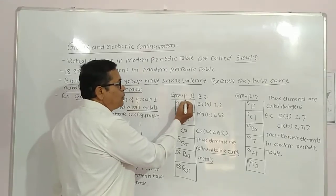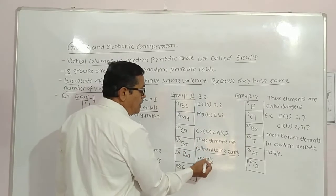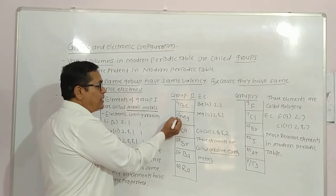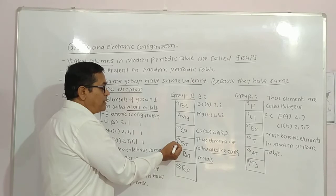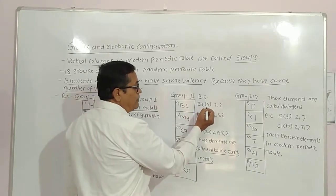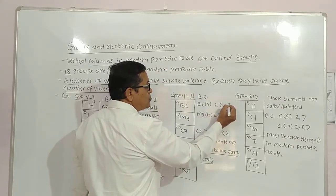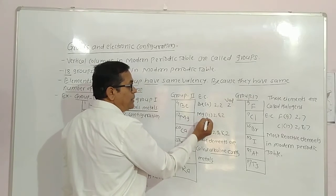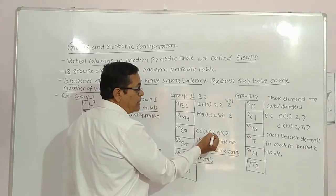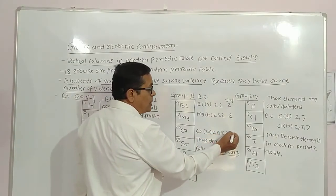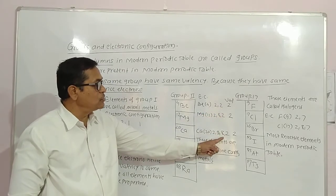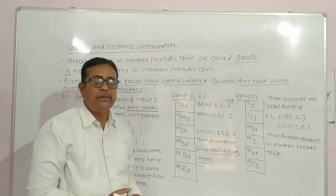Elements of Group 2, also called Group 2A, are called alkaline earth metals. The elements are: beryllium (atomic number 4), magnesium (12), calcium (20), strontium (38), barium (56), and radium (88). Beryllium: electronic configuration 2, 2 — valence 2. Magnesium: 2, 8, 2 — valence 2. Calcium: 2, 8, 8, 2 — valence 2. All Group 2 elements have 2 valence electrons, so their valency is 2 and their chemical properties are the same.